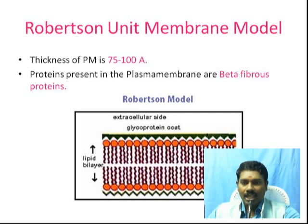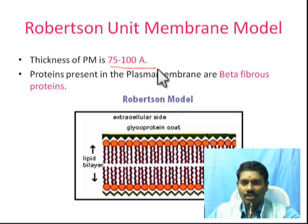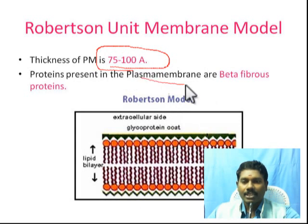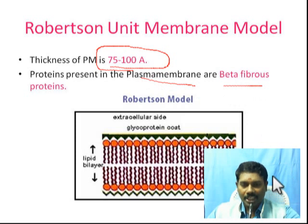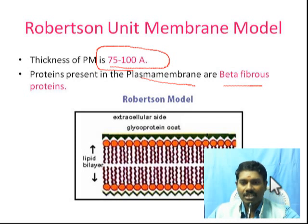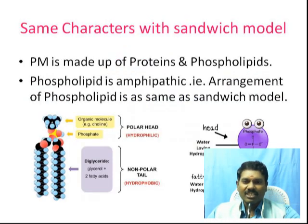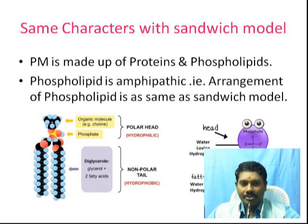Plasma Membrane is very important in a cell. The plasma membrane involves Beta Fibrous Protein. Fiber protein is made up of amino acids — so many chains of amino acids are involved. Some characters will also match with the Sandwich Model. The Sandwich Model is one of the proposed models, and that model and Robertson's model are similar.